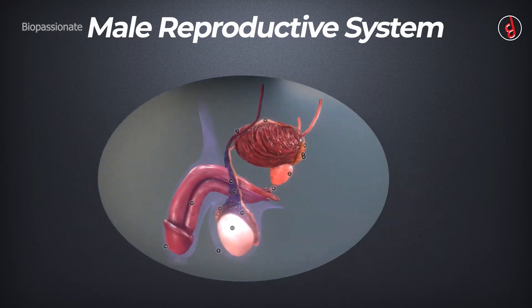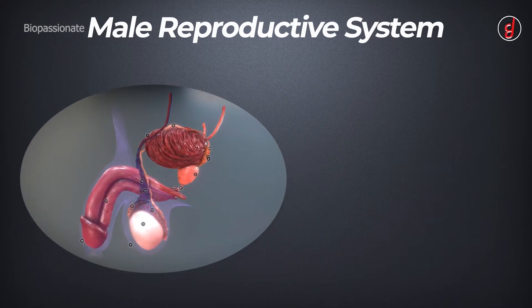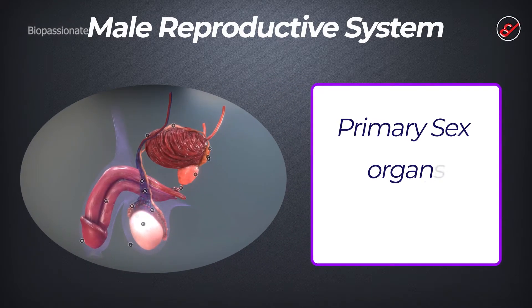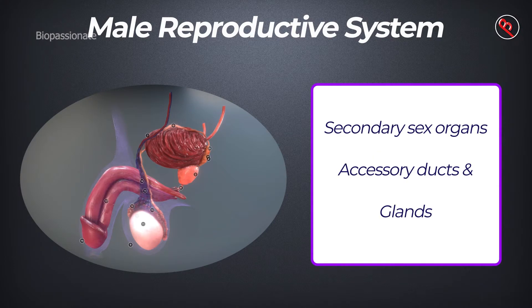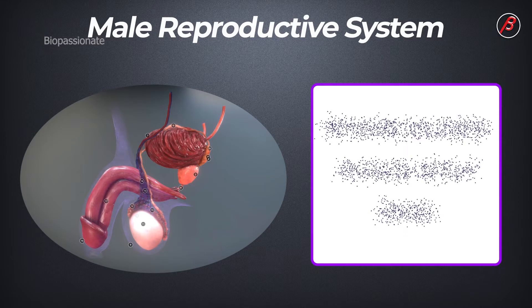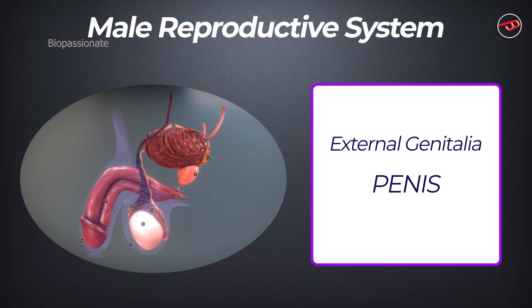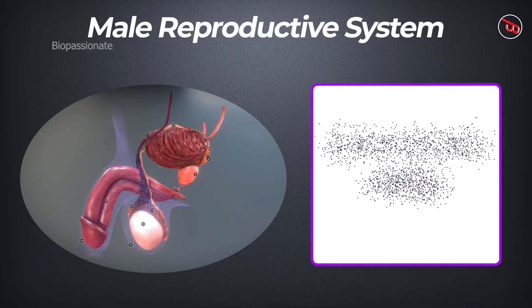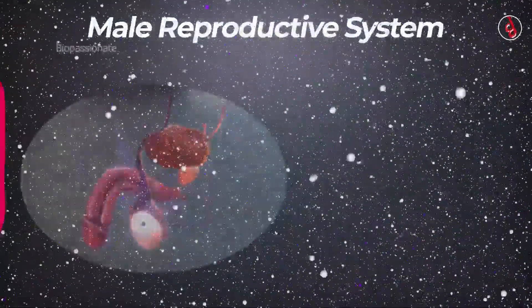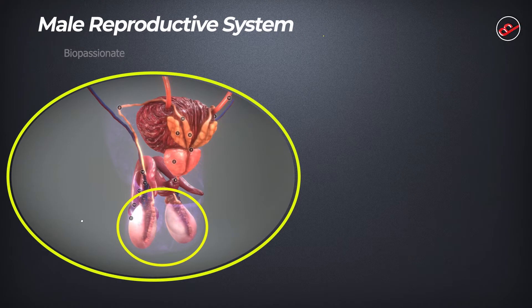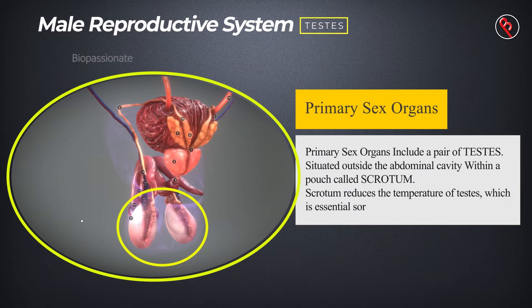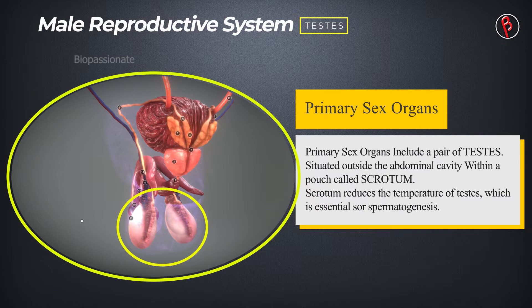The male reproductive system in humans consists of primary sex organs called testes, secondary sex organs called accessory ducts and glands, and external genitalia. Primary sex organs include a pair of testes which are extra-abdominal, meaning situated outside the abdominal cavity.